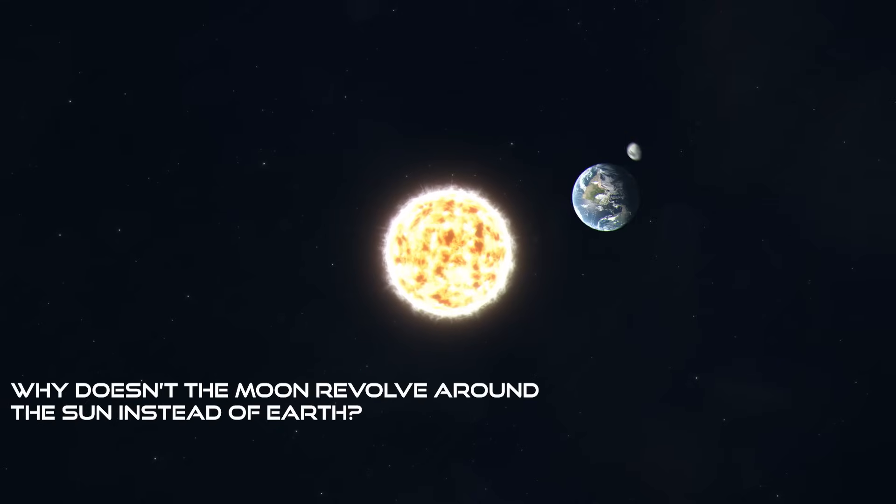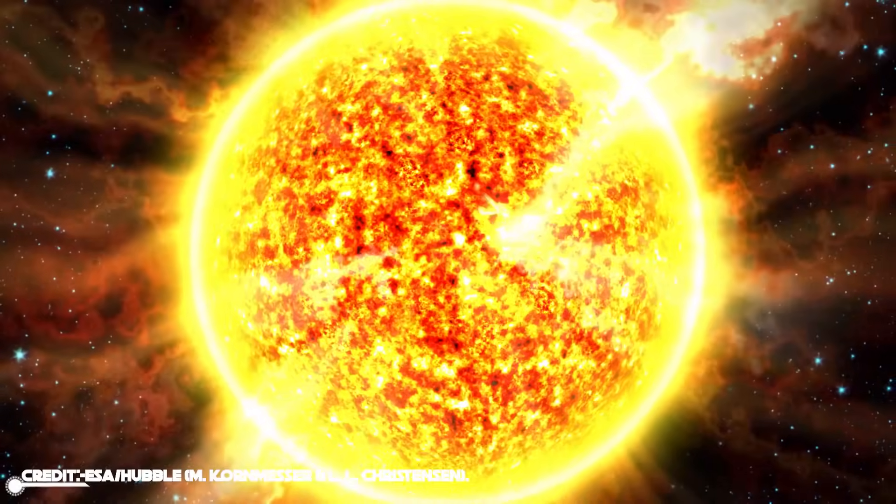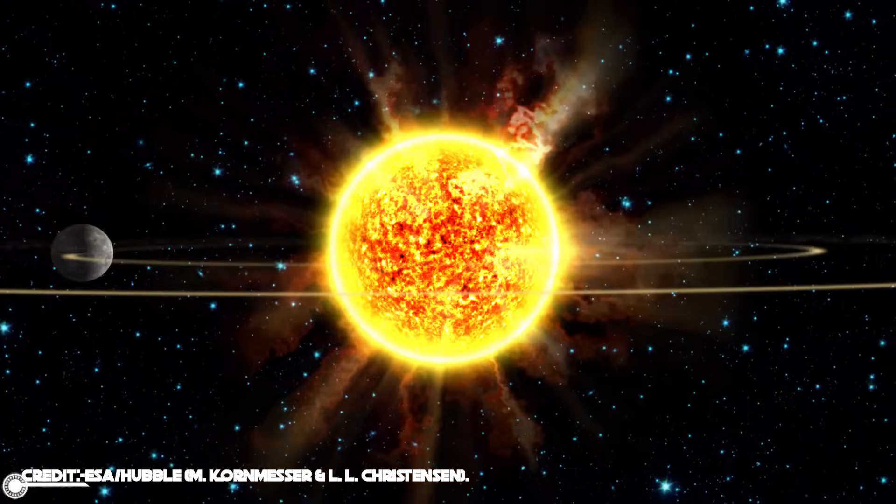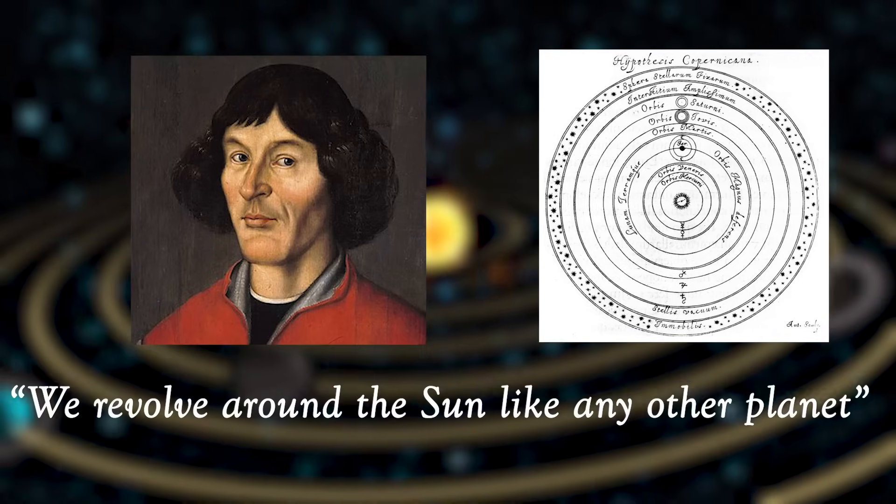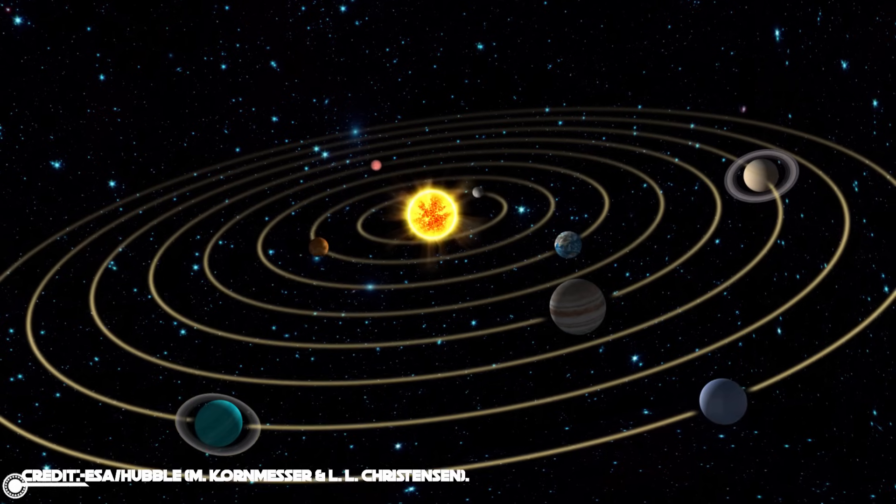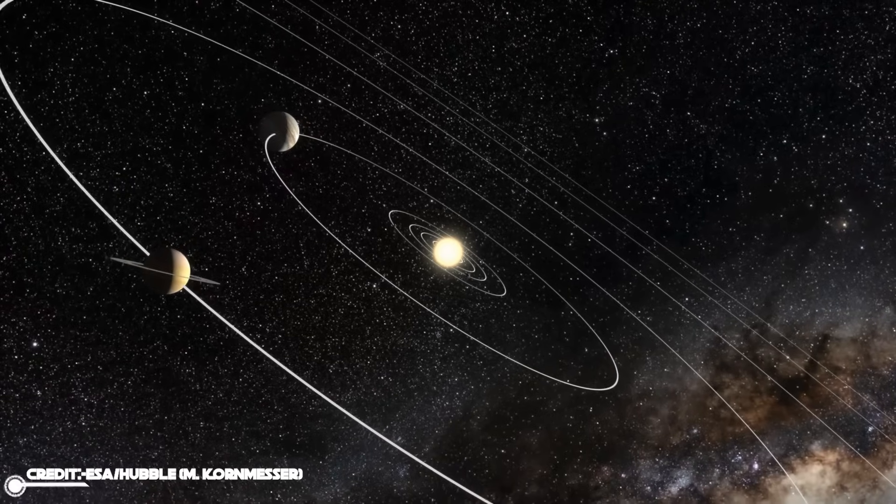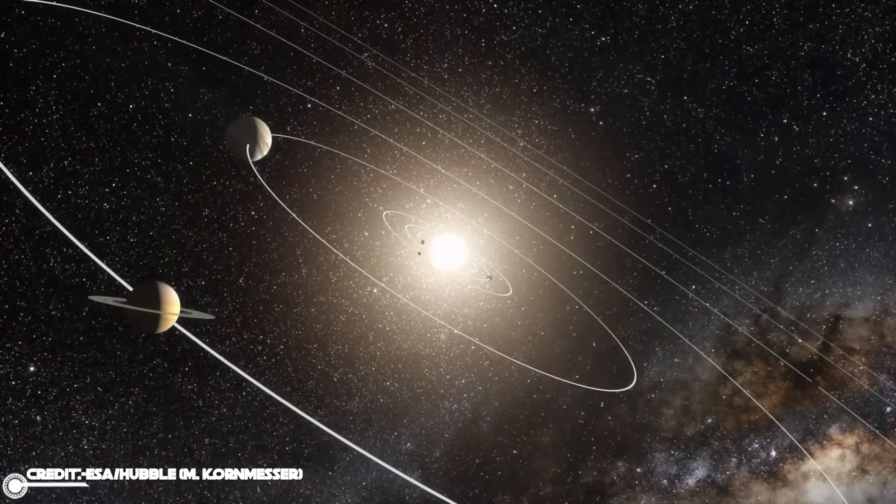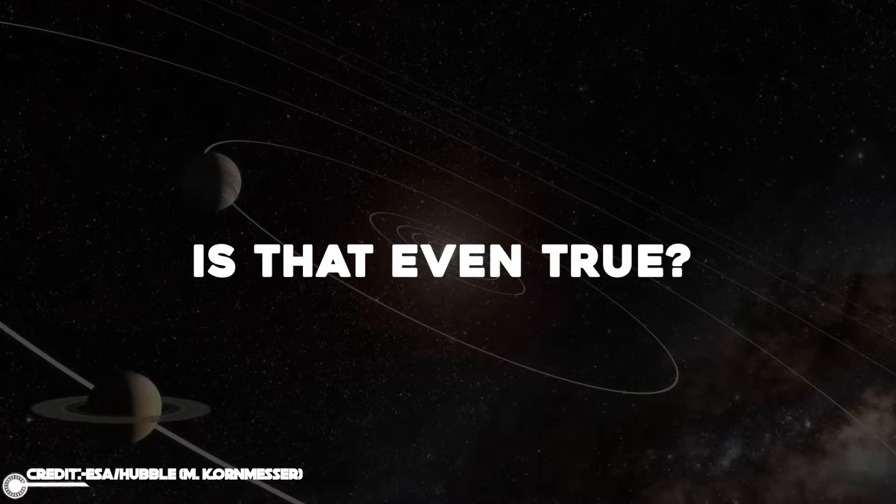Why doesn't the Moon revolve around the Sun instead of Earth? We were all taught in school that everything in the solar system revolves around the Sun. It all started when Copernicus said we revolve around the Sun like any other planet, and it changed our view on the universe forever. Then why does the Moon revolve around the Earth instead of the Sun if the Sun has the capability to take it away from us? Is that even true?